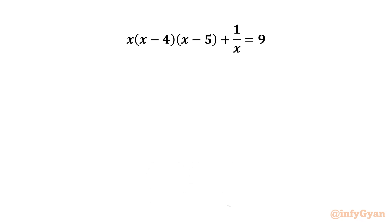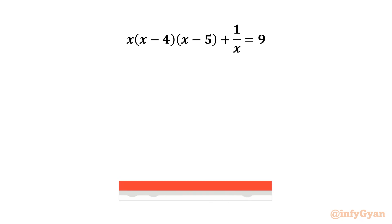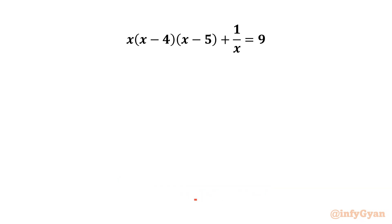Hello my dear friends, welcome back to InfiGAN. Today in this video we have one very interesting question from algebra: x times (x minus 4) times (x minus 5) plus 1 over x equals 9. As we can see, x is in the denominator, so immediately I can write our answer cannot be 0.